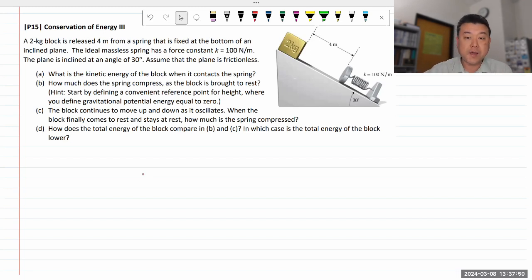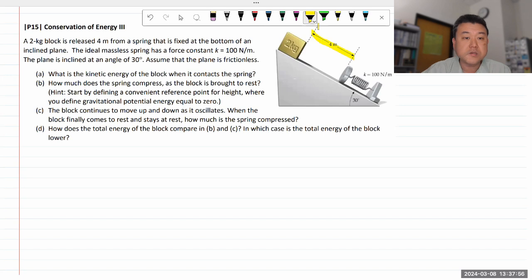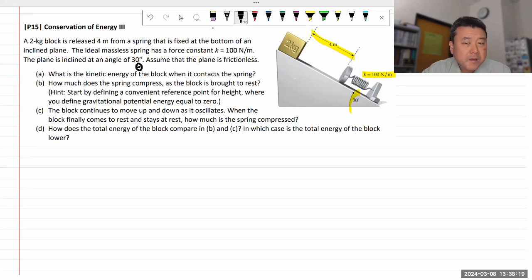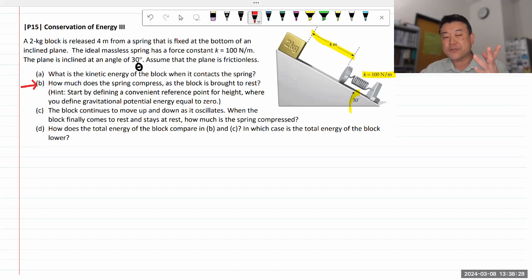It says a two kilogram block is released four meters from a spring that is fixed at the bottom of an inclined plane. The ideal massless spring has a force constant, and the plane is inclined at some angle theta. The plane is frictionless. The question is trying to guide us through steps, but let's just answer in order.